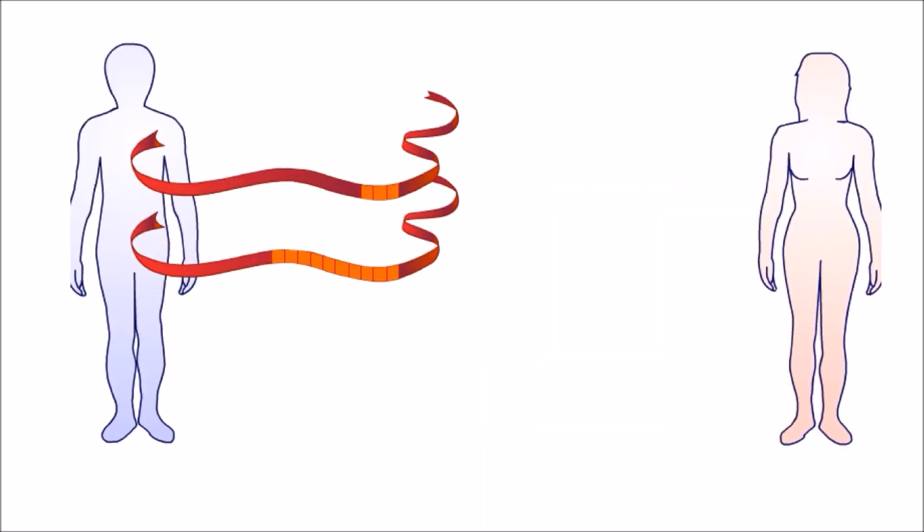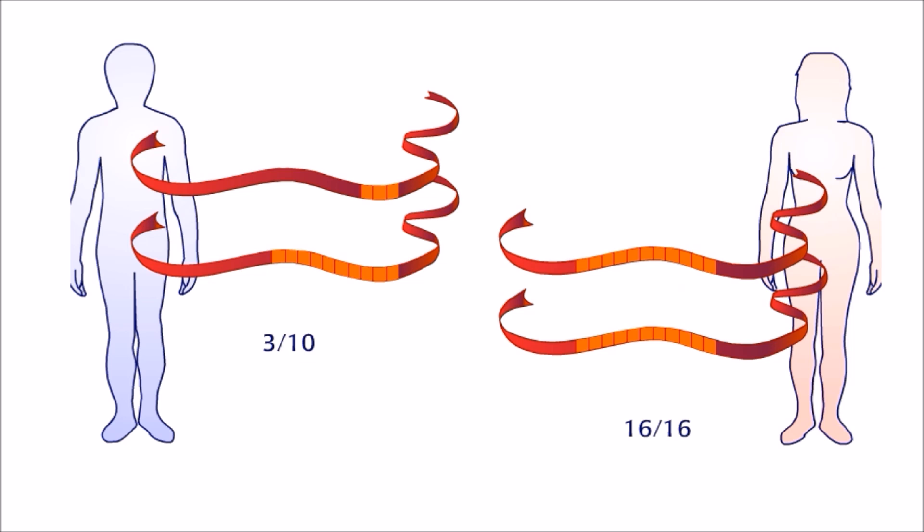Each person inherits their profile of VNTRs and STRs from their parents. Here the man inherited a locus with 3 repeats from his mother and 10 repeats from his father. The man is heterozygous.